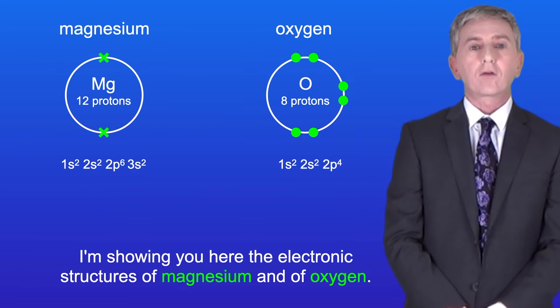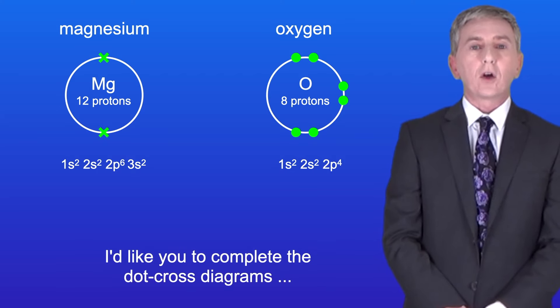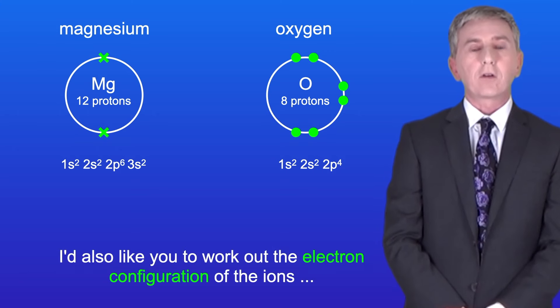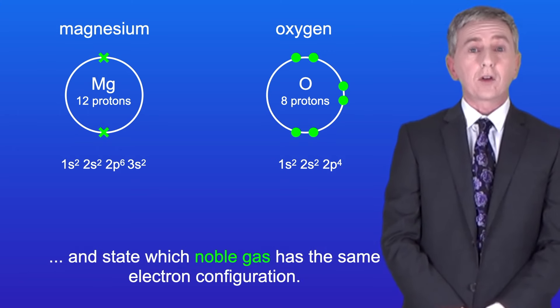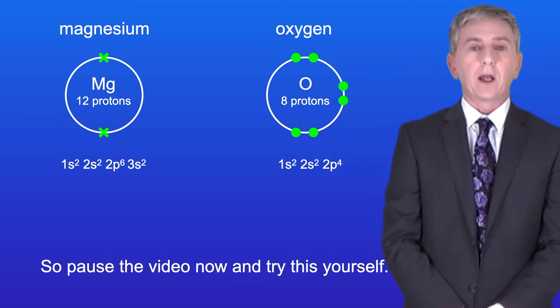I'm showing you here the electronic structures of magnesium and of oxygen. I'd like you to complete the dot cross diagrams for the ions formed when these react. I'd also like you to work out the electron configuration of the ions, and state which noble gas has the same electron configuration. So pause the video now and try this yourself.